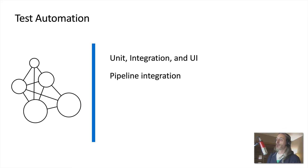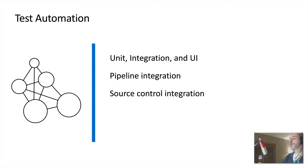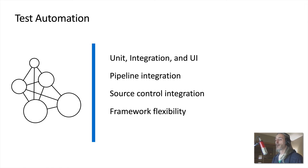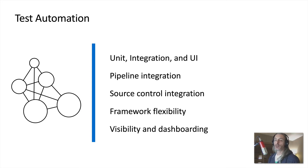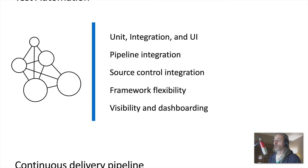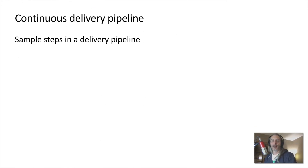We can also automate checks on integrations within our pipeline itself, look through all of the source code to make sure integration is working correctly, test flexibility in our framework, and add dashboarding for visibility. All of these things can be tested with some sort of automation because we want to make sure they're up to our standards.